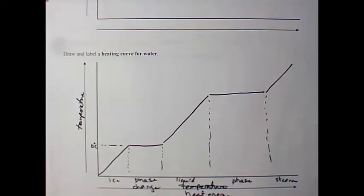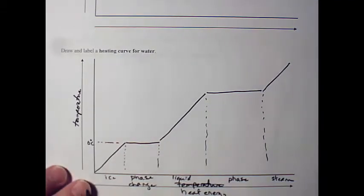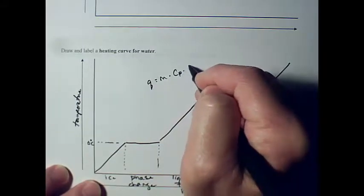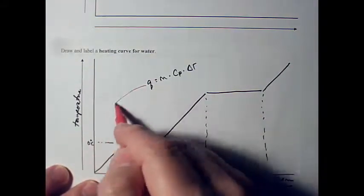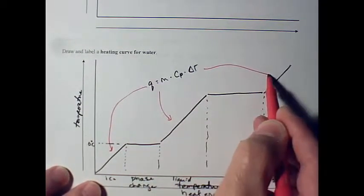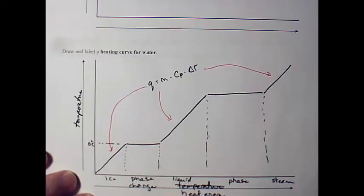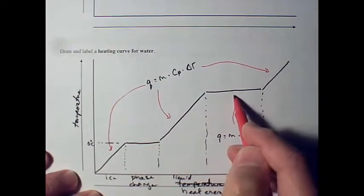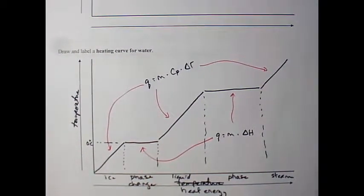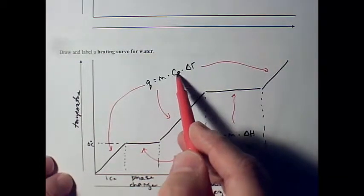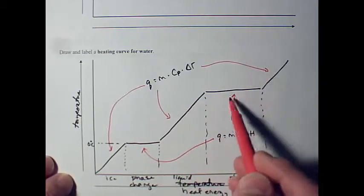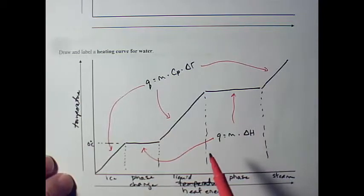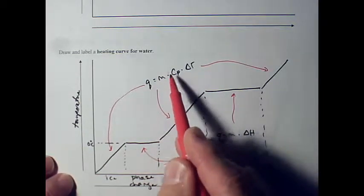There are two different kinds of equations — five equations total but two kinds. When we're changing the temperature, that equation is Q equals mass times specific heat times the change in temperature. Any time we're just changing phase where there's no temperature change, we've got Q equals mass times change in enthalpy. What's different is the specific heat in the three temperature ranges, and the delta H value is different for each phase change.